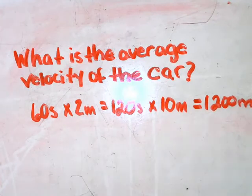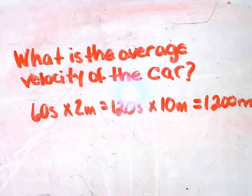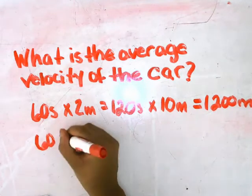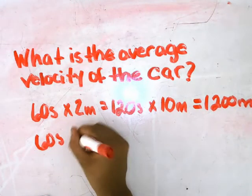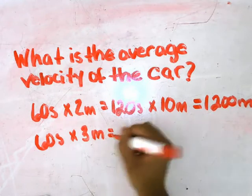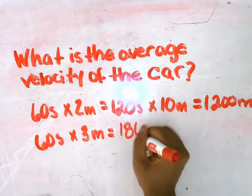Then it says the car turns and travels in the positive y direction at 30 meters per second for 3 minutes. So again, you're thinking how many seconds are in 3 minutes. You're going to do 60 seconds times 3 minutes, which is going to be equivalent to 180 seconds.